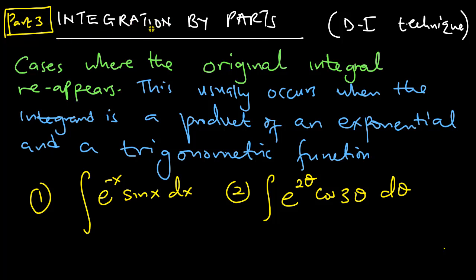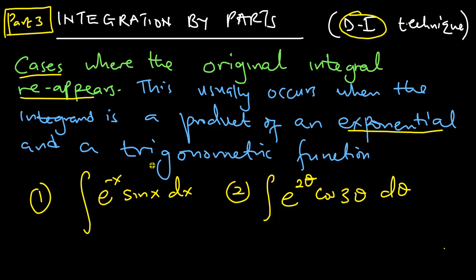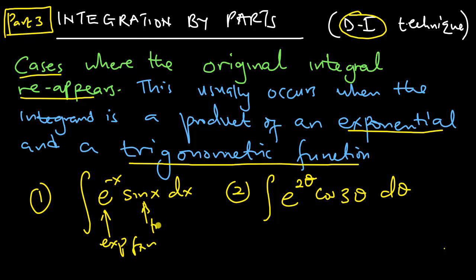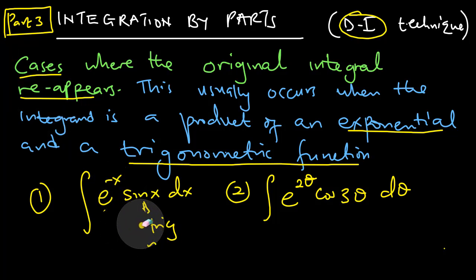Welcome to part 3 of my series on integration by parts using the DI technique. In this part 3, we are going to look at cases where the original integral reappears. This is actually very common when the integrand is a product of an exponential function and a trigonometric function, and such cases usually give rise to integrals that reappear. Let's try to work this out using the DI method.